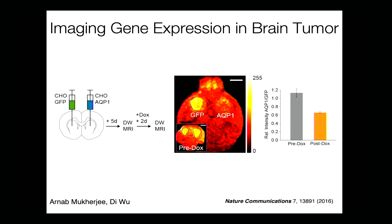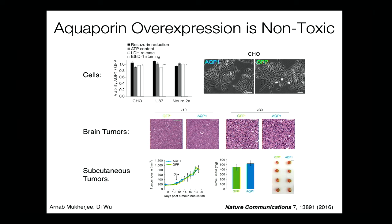For some reason people seem to be concerned about overexpressing aquaporin — are you going to make the cell swell? You're not, because it's a passive channel; the water just goes in and out and nothing is being pumped. The only time aquaporin expression is deleterious is if you're under osmotic imbalance, in which case water rushes in more quickly — but if you're under osmotic imbalance you're going to die anyway. We showed in four different assays that overexpressing aquaporin has no impact on cell viability, and showed in vivo that tumors expressing aquaporin look the same on the cellular scale and grow the same when implanted subcutaneously. So I think it's a pretty good reporter gene to use.